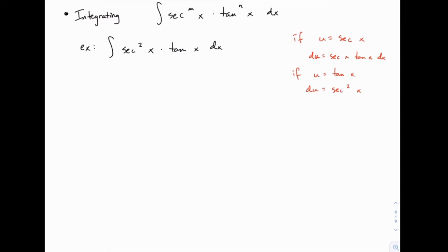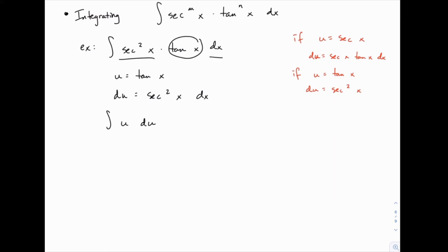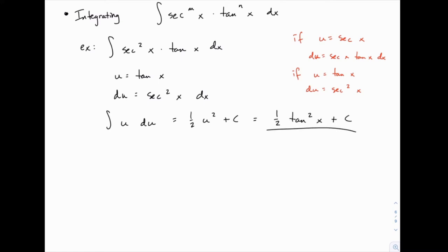Once you recognize that, we're going to approach it in much the same way — splitting off something to serve as du, and letting the remainder work in terms of u. For this example, we can select u equals tangent of x, and right away du equals secant squared dx. Every piece of this integral can be replaced: the integral becomes u times du, which integrates to one half u squared plus c, or one half tangent squared of x plus c.